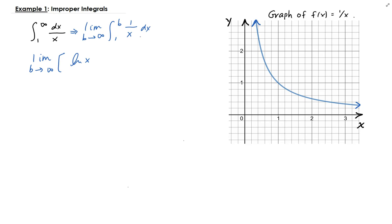From there we need to plug in our bounds. So we have the natural log b minus the natural log of 1.